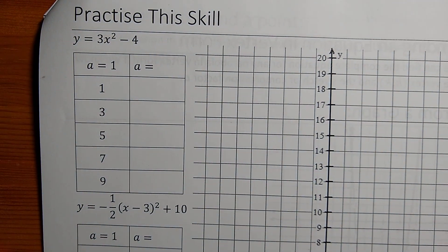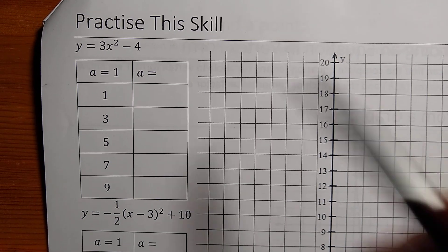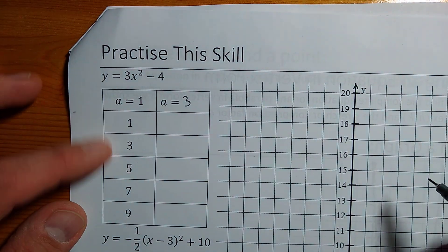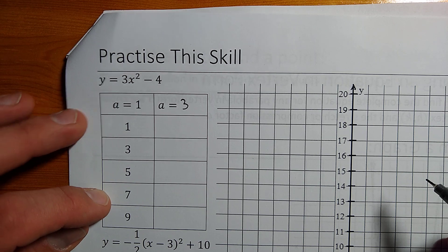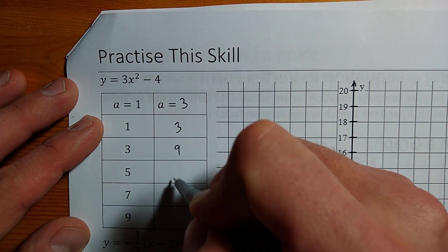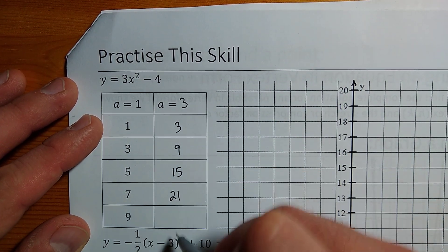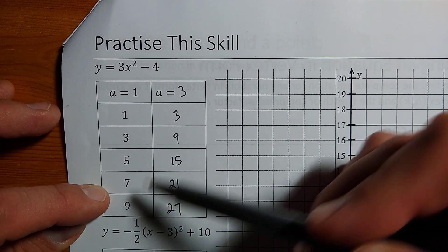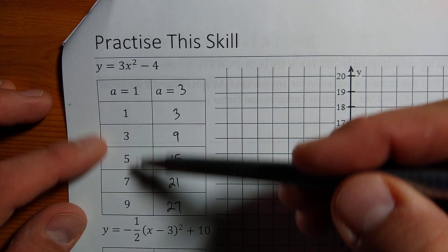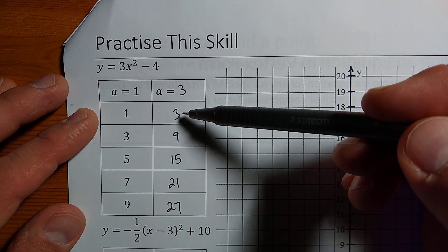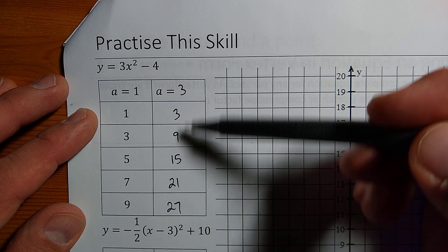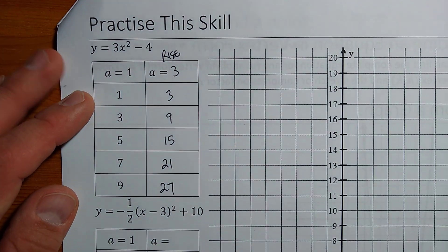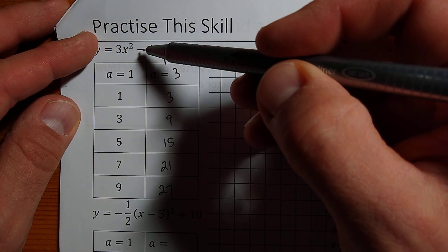So practice this a little bit. Let me just do a couple of these with you right now. In this case, the a value is 3. So this old step pattern, 1, 3, 5, 7, 9, is going to become 3, 9, 15, 21, 27. I took all of these values, the step pattern values, and multiplied them by 3. Now, these are not x and y values. These end up being the rise values as we graph.